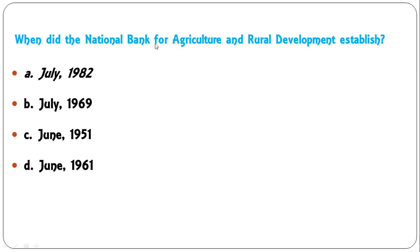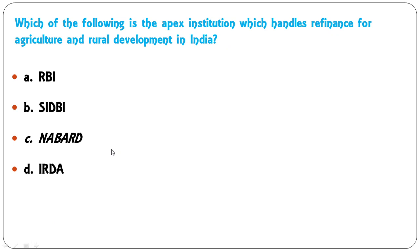When did the National Bank for Agriculture and Rural Development establish? Options: July 1982, July 1969, June 1951, June 1961. The correct answer is July 1982, when NABARD was established.